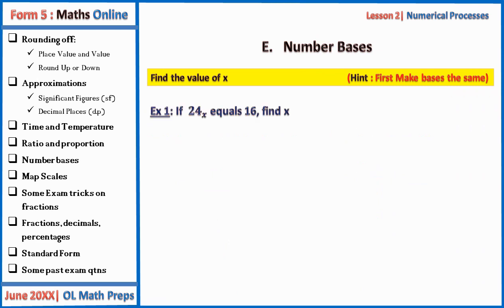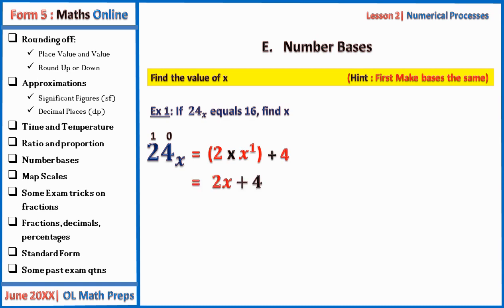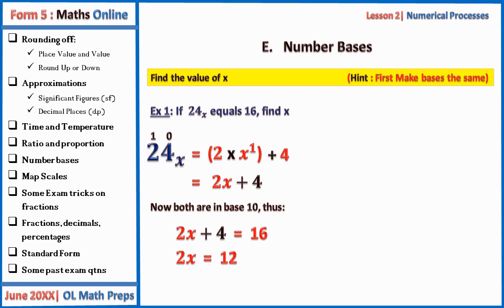Past question example: if 24 base x equals 16, find x. Note that 16 is in base 10. The hint is to make the bases the same by converting everything to base 10. So 24 base x in base 10 is: 2 × x¹ + 4 × x⁰ = 2x + 4. Setting equal to 16: 2x + 4 = 16, so 2x = 12 and x = 6.